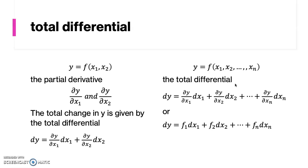Alternatively, we can write it as follows: ∂y/∂x1 is equal to f1, ∂y/∂x2 is f2, and so on until fn. Or, in a shorter way, it is the sum of fi·dxi, where i goes from 1 to n. To understand how to conduct a total differentiation, let's use the following example.